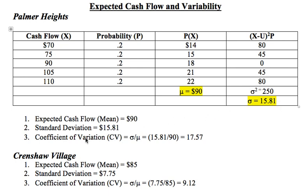The third question was to compute the coefficient of variation, which is the standard deviation divided by the mean — giving us 17.57. As I pointed out in class, by itself the coefficient of variation is kind of meaningless. We have to have something to compare it against.